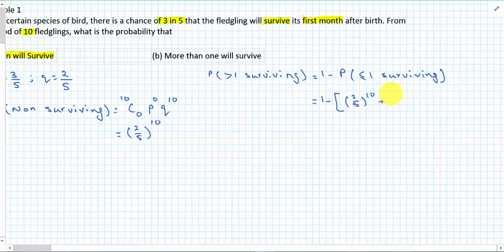So that would be one minus probability of non-surviving, we've already worked out, two on five to the power of ten. Probability of one surviving, we're choosing one, P is our rate of survival, which we want one of those and nine of the others. So one minus two on five to the ten plus ten choose one is ten, P is three-fifths, and Q is two-fifths.